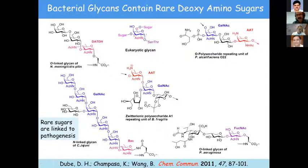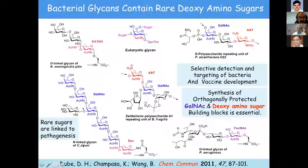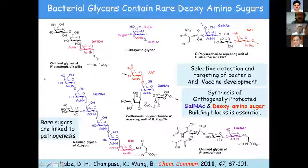There is also increased interest in zwitterionic polysaccharides, such as a tetrasaccharide repeating unit from Bacteroides fragilis and a trisaccharide from P. gingivalis. Because bacteria have these sugars and we don't, they are very important for selective detection, imaging, targeting bacteria, and vaccine development. As organic chemists, what we need is access to these building blocks — N-acetylgalactosamine and the rare sugars — as orthogonally protected building blocks, so we can assemble them stereoselectively to make longer glycans, test antigenicity for vaccine development, and use monosaccharides for selective detection and targeting.